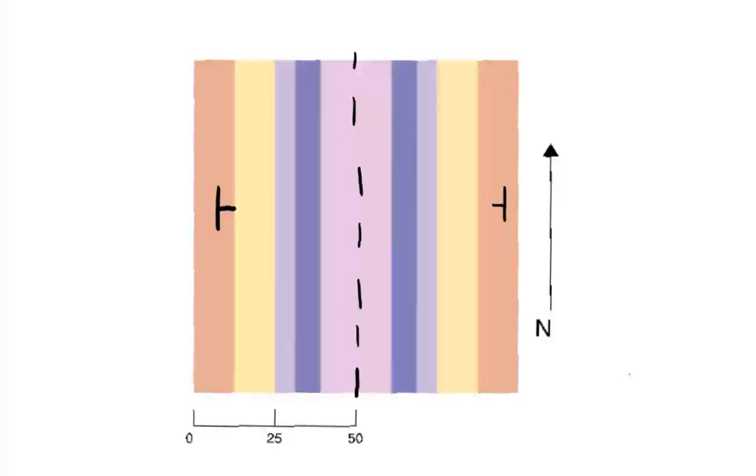So on a geologic map, you might see this succession of rock formations on the map. Pink, and then on either side of it, you have blue, lavender, yellow, light brown, each of them indicating a different rock formation. That's an indication that there's a fold in the subsurface.